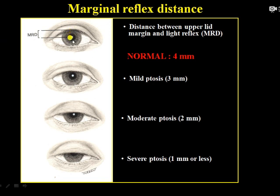If MRD is 3 mm, it is graded as mild ptosis. A value of 2 mm is labeled as moderate, and less than 1 mm is known as severe ptosis. Remember it can also go into negative — for example, minus 1 mm if the lid margin is 1 mm below the reflex. In that case, you check it by elevating the lid manually.